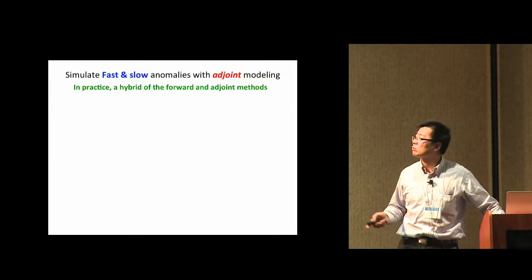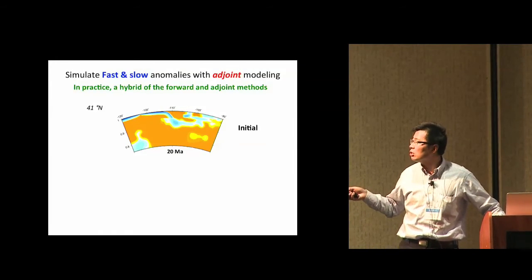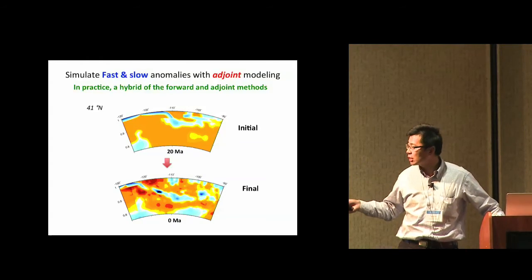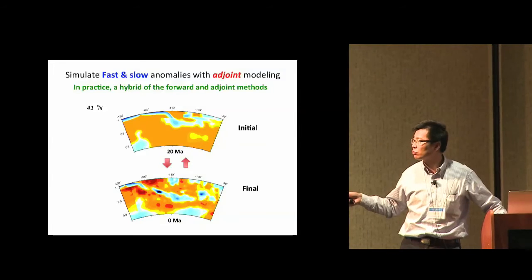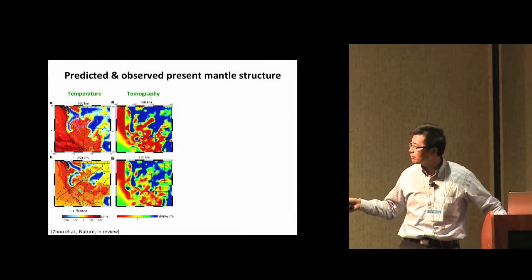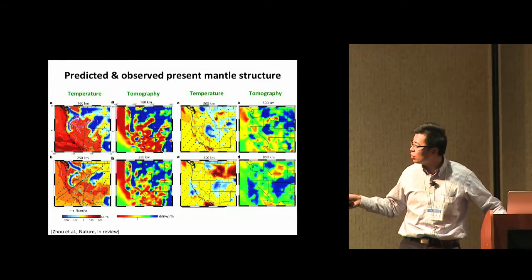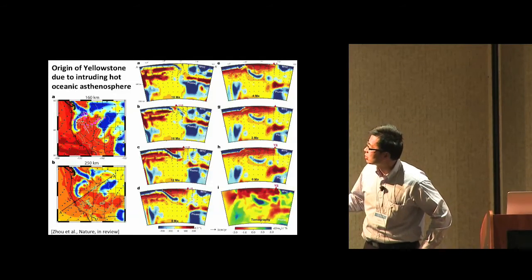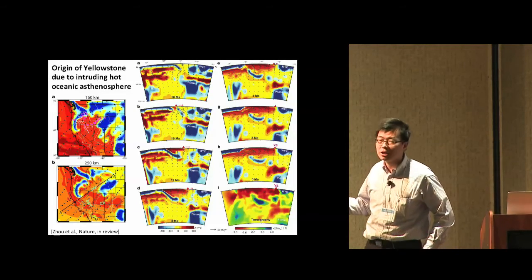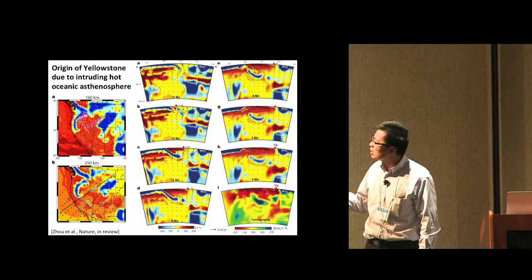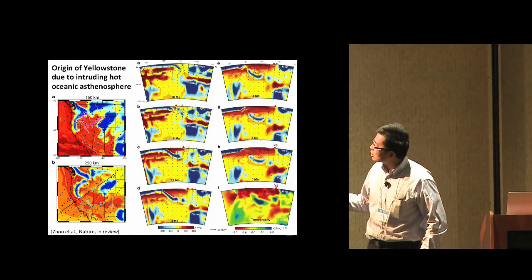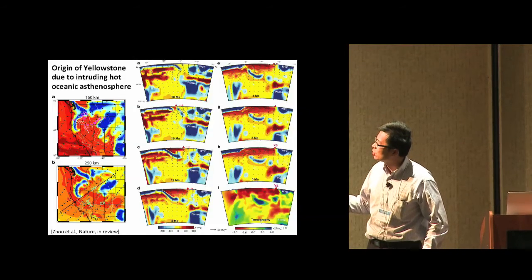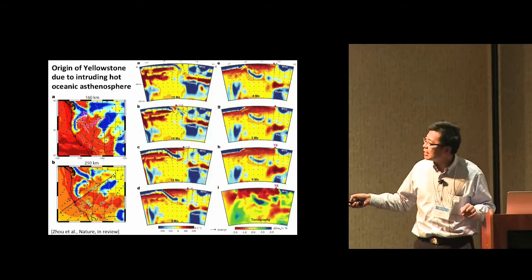To find the true reason, we use an adjoint inverse model. We start with an initial guess, run forward in time, compare with tomography, then propagate the residual backwards — iterating back and forth until we get the best fit. The result shows temperature versus tomography at different depths in the lower mantle matching almost perfectly. What we found is that during this whole process the so-called mantle plume is not doing much — instead, it is hot oceanic mantle coming from the oceanic side through the edge of the slab into the western U.S.